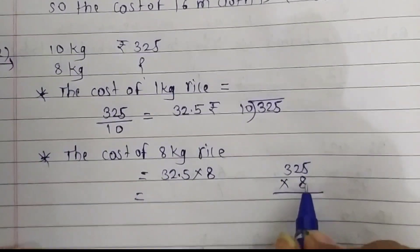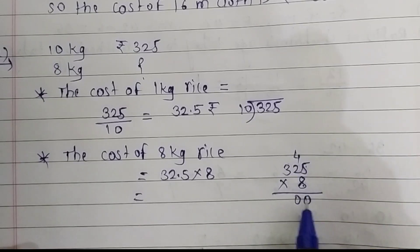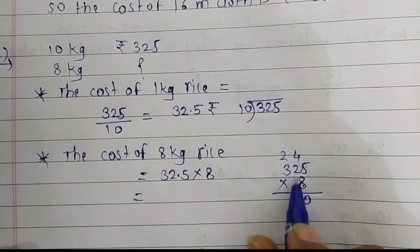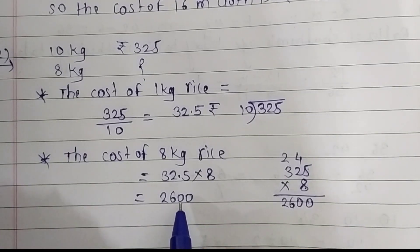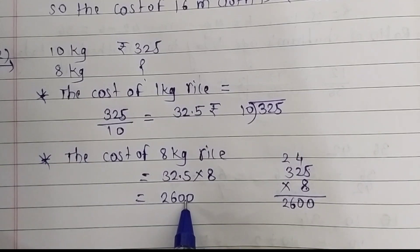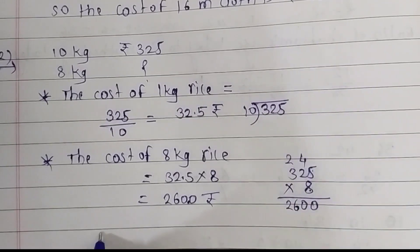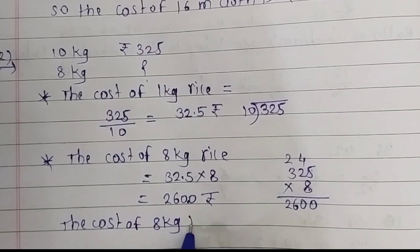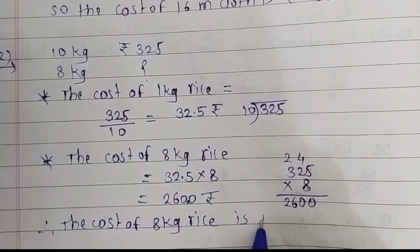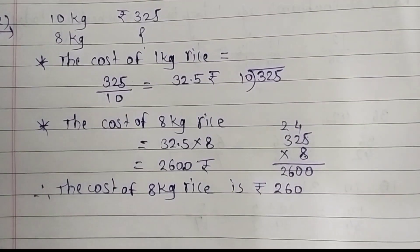Multiply 325 by 8, ignoring the decimal point: 8 fives are 40, carry 4; 8 twos are 16 plus 4 is 20, carry 2; 8 threes are 24 plus 2 is 26. Now place the decimal point. The cost of 8 kg of rice is rupees 260. This is our answer for the second question.